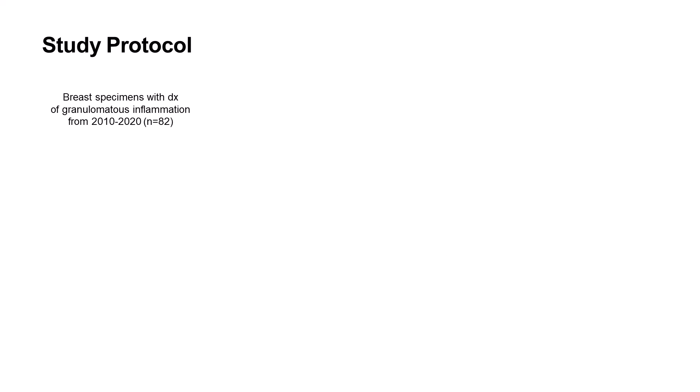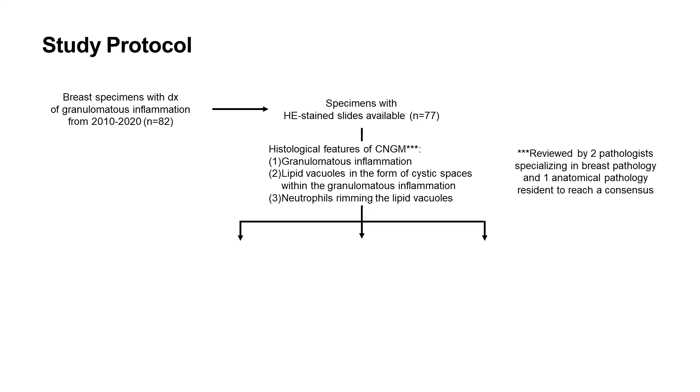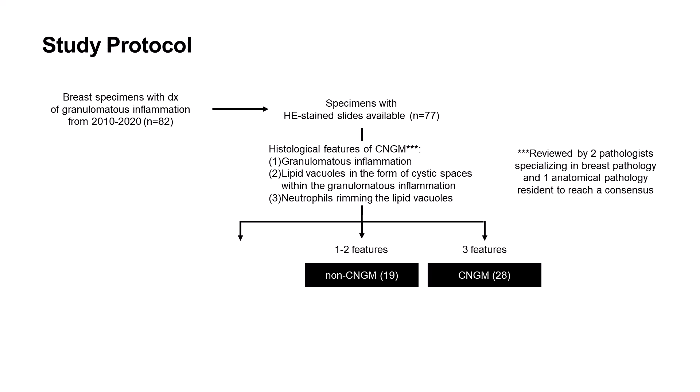The authors retrospectively identified breast specimens with a diagnosis of granulomatous inflammation, selecting those with H&E stained slides available for review. These cases were reviewed by multiple pathologists to reach consensus on whether each case had any of the three histological features of CNGM. Cases were assigned to the CNGM group if all three features were present, the non-CNGM group if one to two features were present, and excluded if none were present.